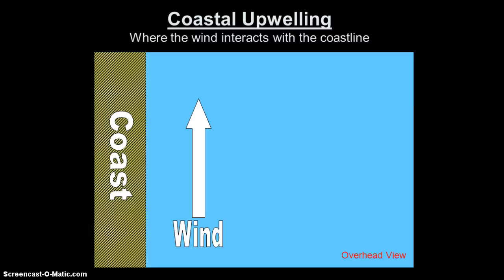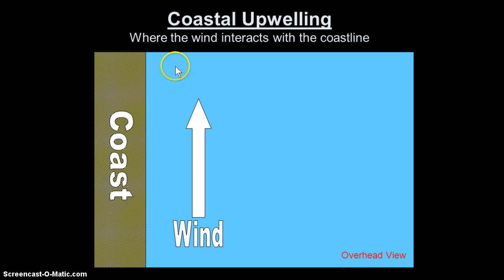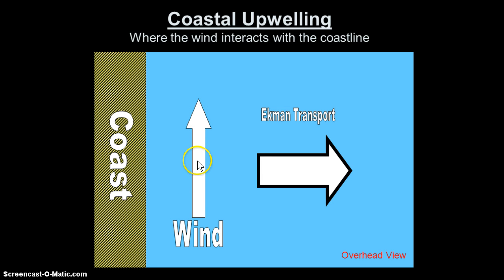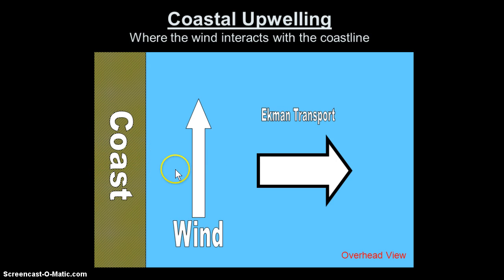So what happens if we have that effect where the wind is also interacting with the coastline — not so much an interaction, but a boundary? What if it's constrained by a coastline? Let's say this is the east coast, off the coast of New Jersey, and we have a northward wind in the northern hemisphere blowing up along the coast. Ekman transport would dictate that the water near the coast is moved to the right. Since this is coast, there's no water to replace that.